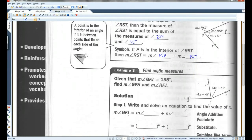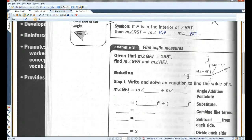Let's do an example. Given that the measure of GFJ, so this whole thing, is 155 degrees. Find these two angles. Now, according to the angle addition postulate, we know that GFJ is equal to this angle plus this angle. So the measure of angle GFH plus the measure of angle HFJ. That's the angle addition postulate. We know the measure of angle GFJ is 155 degrees. And we know that these two angles are these little expressions in terms of X.